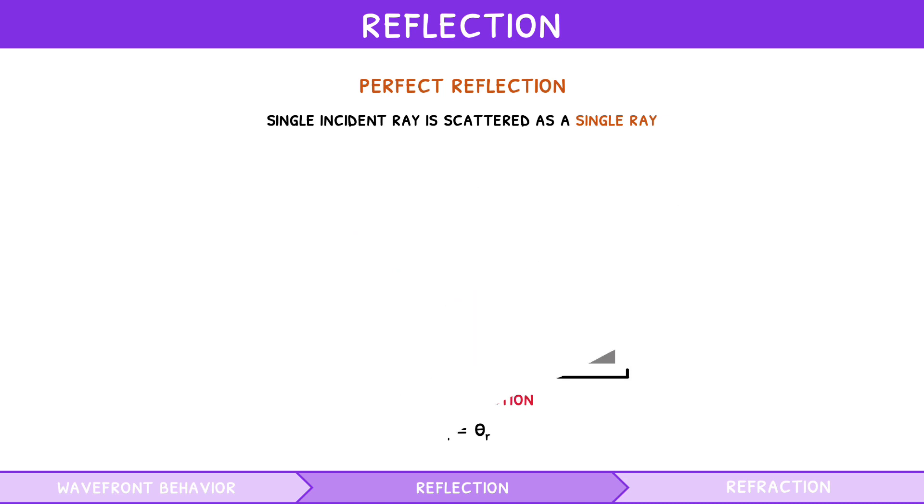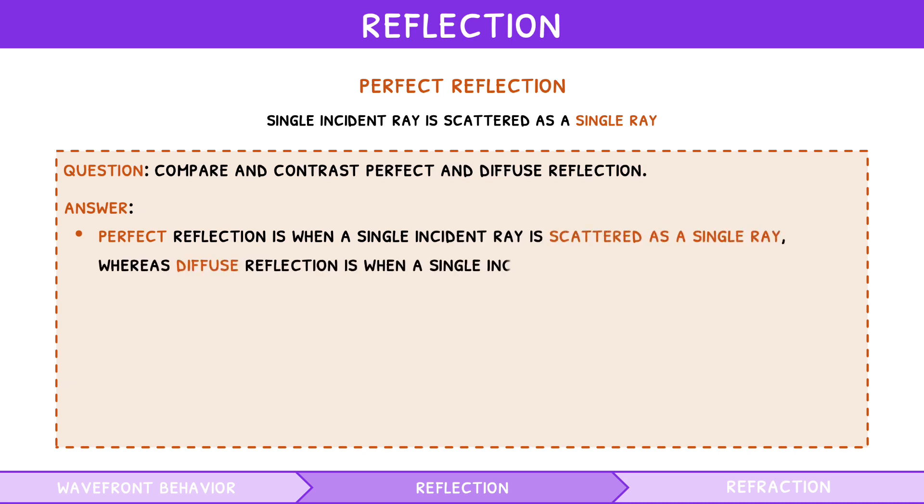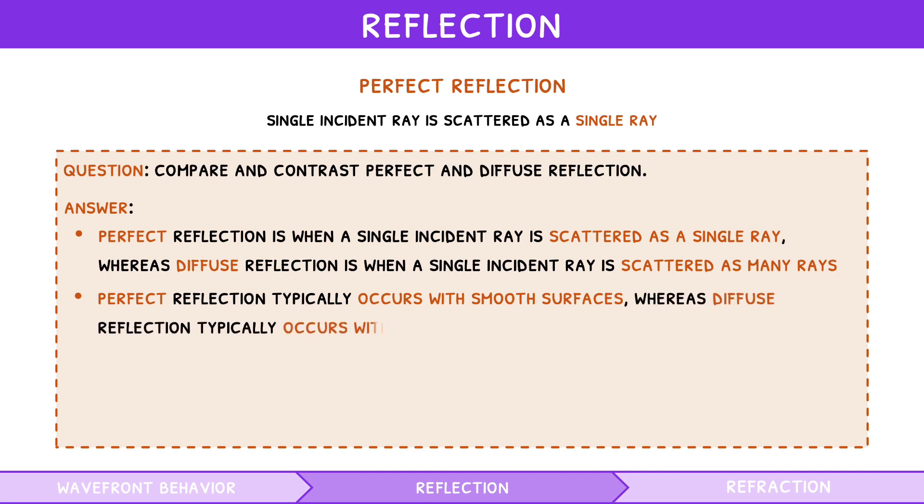Let's consolidate this with a practice question. Compare and contrast perfect and diffuse reflection. Answer: perfect reflection is when a single incident ray is scattered as a single ray, whereas diffuse reflection is when a single incident ray is scattered as many rays. Perfect reflection typically occurs with smooth surfaces, whereas diffuse reflection typically occurs with rough surfaces.